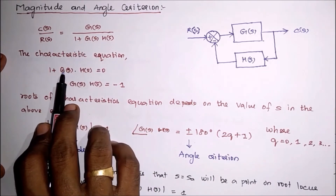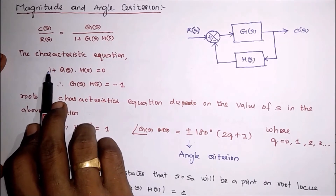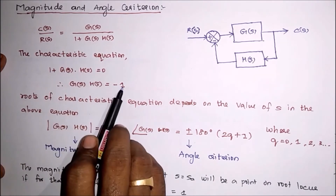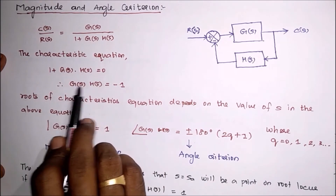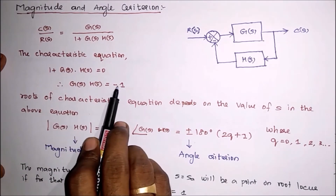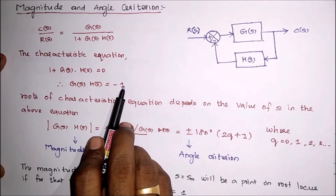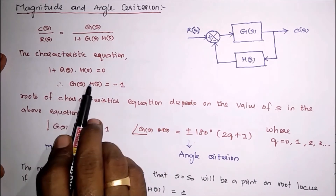From the closed-loop transfer function, the characteristic equation equals its denominator set equal to zero. If we bring the denominator term to the right-hand side, we get G(S) into H(S) equal to minus 1.